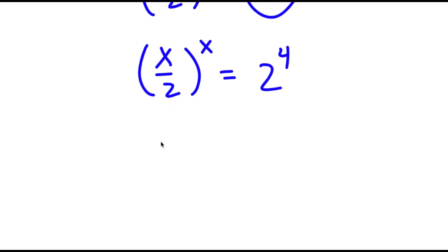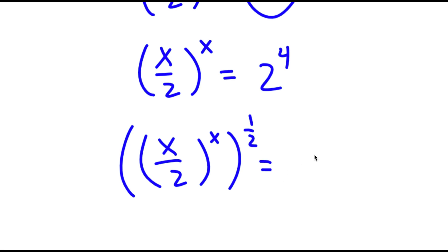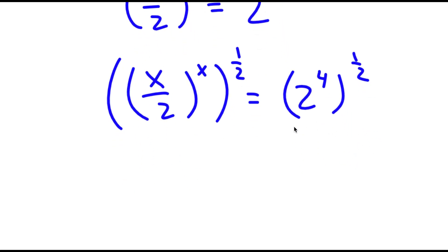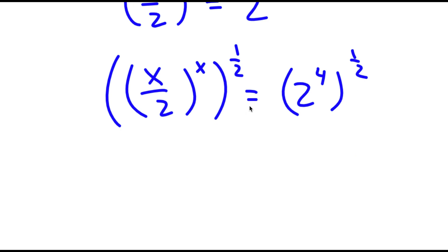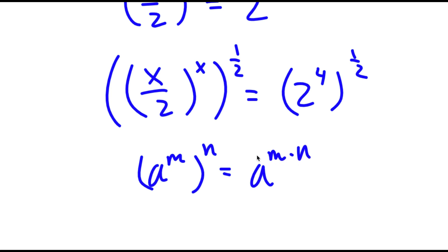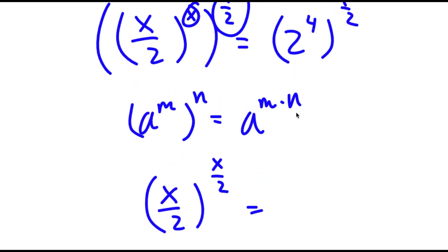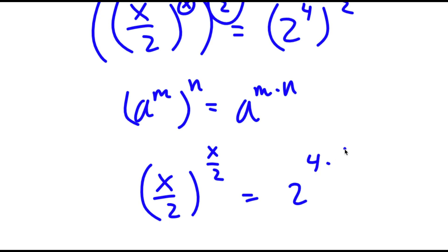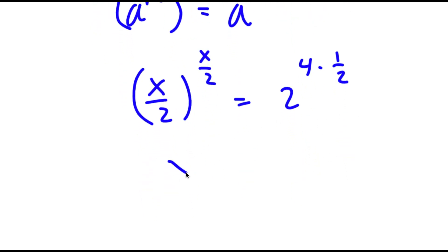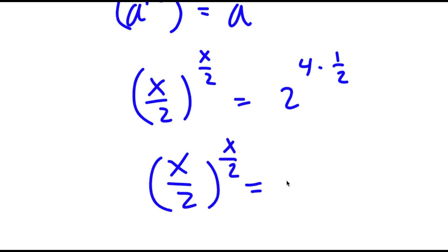Now I'm going to take the power of 1 half on both sides. So now I have x over 2 to the power of x to the power of 1 half is equal to 2 to the power of 4 to the power of 1 half. Now, x over 2 to the power of x to the power of 1 half — if I have something in the form a to the power of m to the power of n, this equals a to the power of m times n. So I can multiply x and 1 half, giving x over 2 to the power of x over 2, equal to 2 to the power of 4 times 1 half, which is 2 to the power of 2.